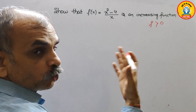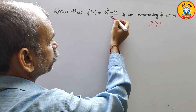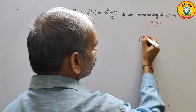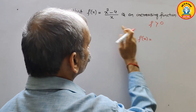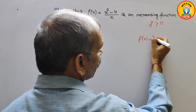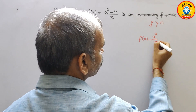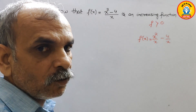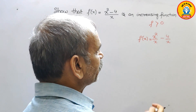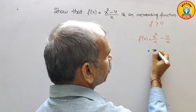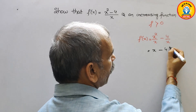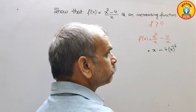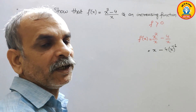First, we will rewrite f(x). We split it to get x²/x minus 4/x, which simplifies to x minus 4x⁻¹.